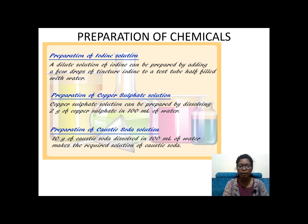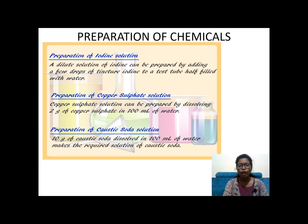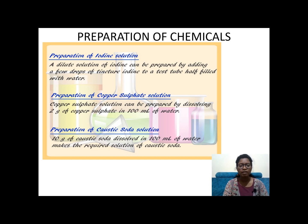Now we are going to learn to prepare some chemicals. There are three chemicals: iodine solution, copper sulfate solution, and caustic soda solution. To prepare iodine solution, dissolve iodine powder in a half-filled test tube of water. To prepare copper sulfate solution, dissolve 2 grams of copper sulfate in 100 ml of water. To prepare caustic soda solution, add 10 grams of caustic soda in 100 ml of water.